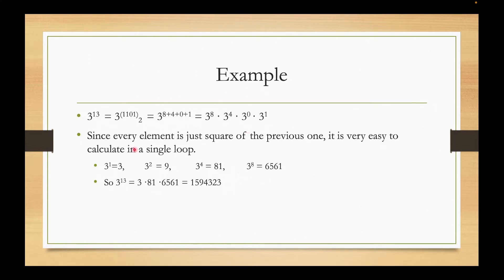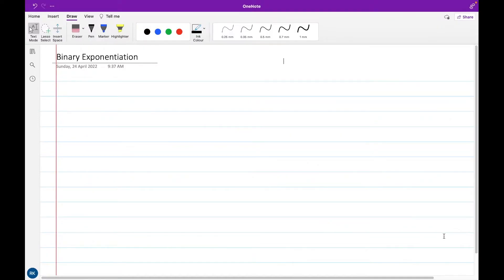Let's see the implementation. So now I will show you the implementation of the code. Like in the previous example we saw that 3 to the 13 can be written as 3 raised to power 1101 base 2, and it is the same as 3 raised to power 8 times 3 raised to power 4 times 3 raised to power 0 times 3 raised to power 1.